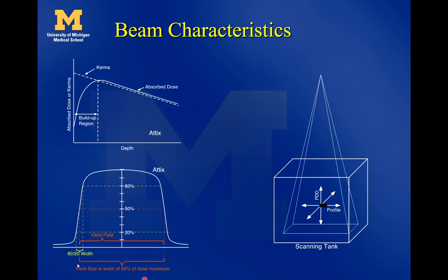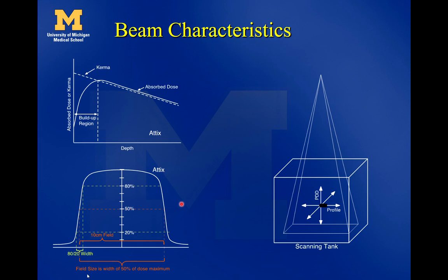Another important characteristic is field size, defined as the width at 50% of the maximum dose. Starting at 100% on central axis, the field size is determined by how wide the beam is where you're getting half the dose as you go from inside to outside the beam. The linac manufacturers make it so that the 50% isodose width matches what the light field shows anyway.